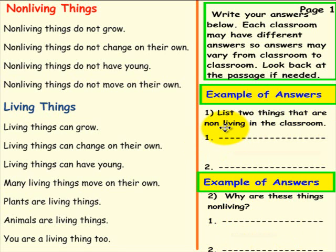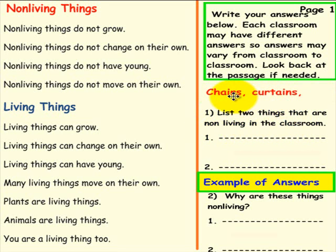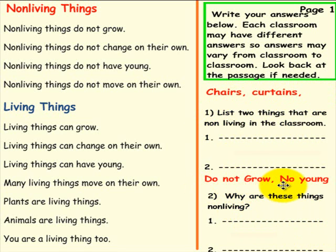Okay, here's what we have as answers. Number 1: List two things that are non-living in the classroom. We said chairs and curtains — and of course you could fill in with many more items. Question 2: Why are these things non-living? Our answers were: do not grow, and no young. Again, you could have had different answers. If your answers are the same as ours or better, that is truly fantastic. Way to go.